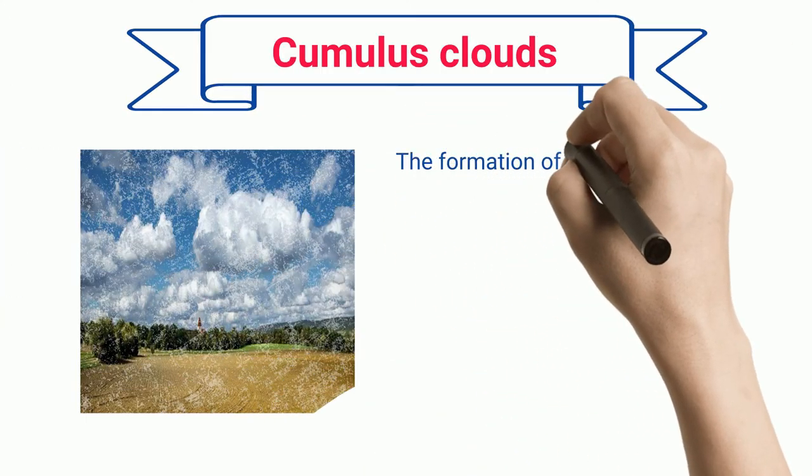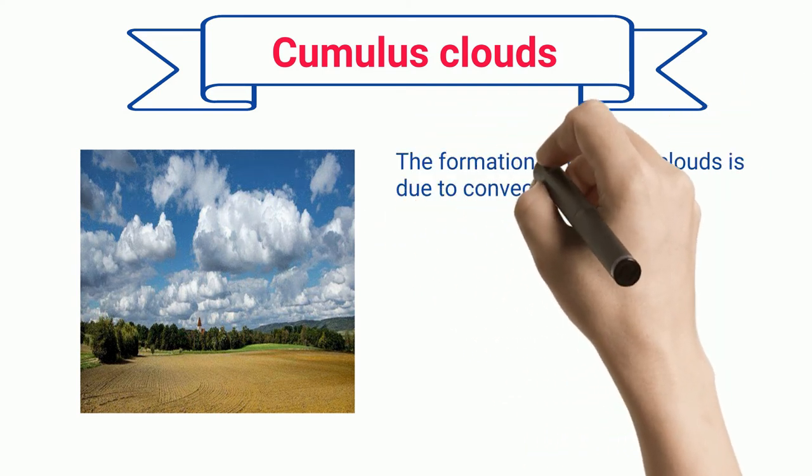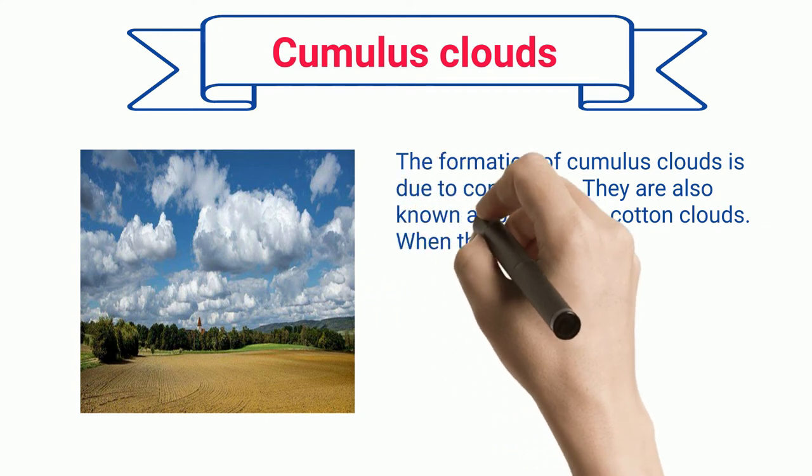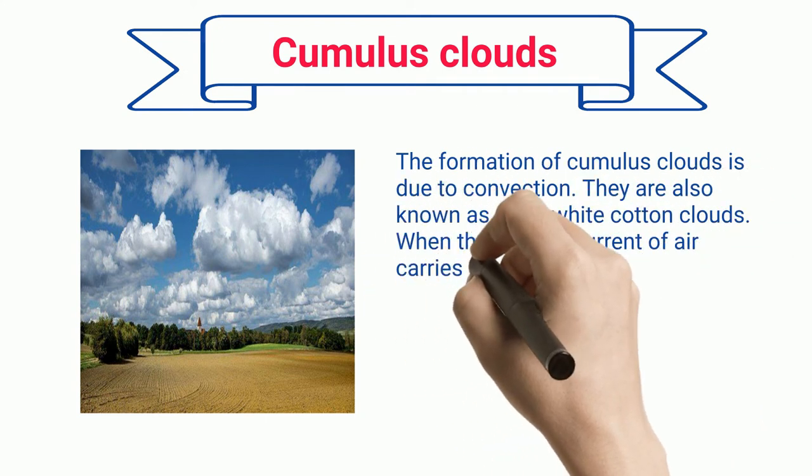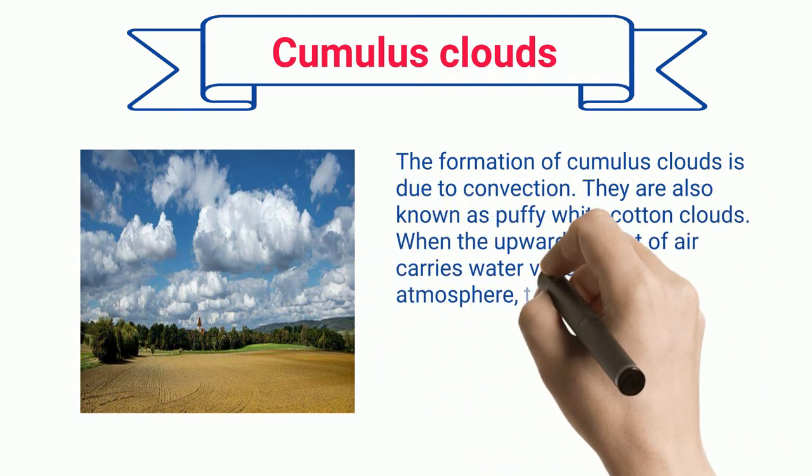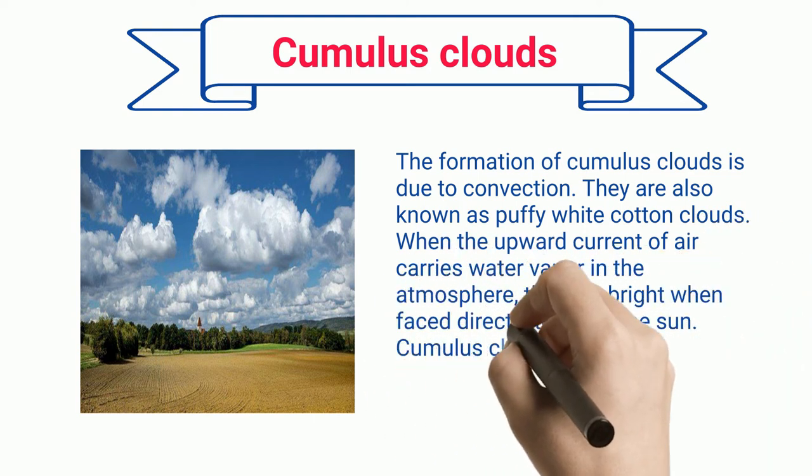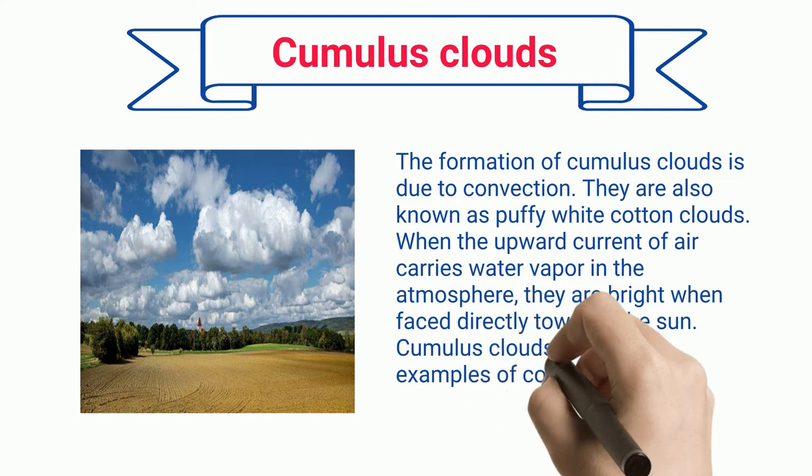Cumulus Clouds: The formation of cumulus clouds is due to convection. They are also known as puffy white cotton clouds. When the upward current of air carries water vapor in the atmosphere, they are bright when faced directly towards the sun. Cumulus clouds are unique examples of convection heat transfer.